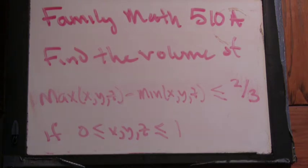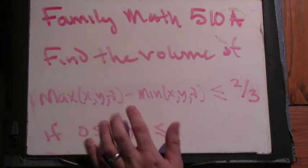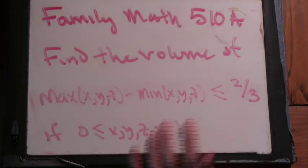Numbers x, y, z are distributed uniformly in 0 to 1. That means they're all between 0 and 1. Find the probability that the maximum value of x, y, z minus the minimum value is less than or equal to 2 thirds.